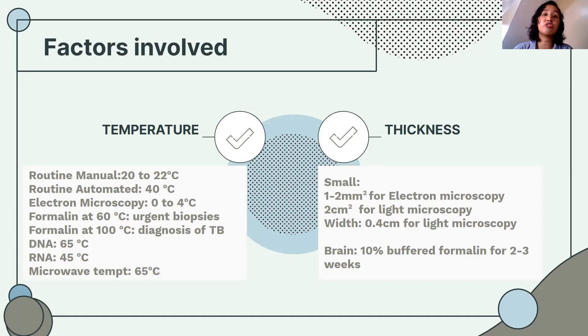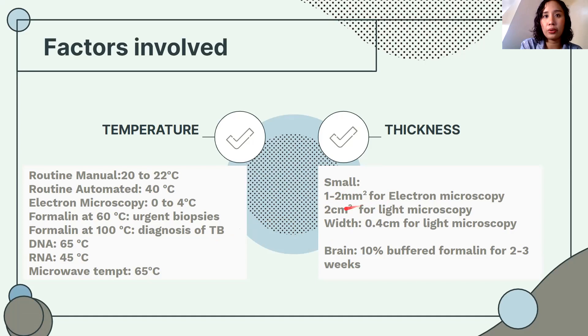The tissue dimensions for fixation: for light microscopy, 2 by 2 cm with a width of 0.4 cm; for electron microscopy, 2 mm squared. For brain specimens, 2 to 3 weeks of submersion in formalin is required.